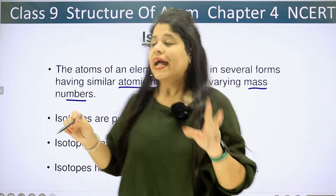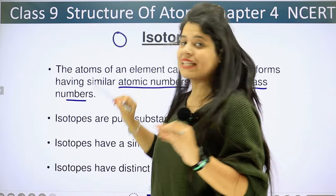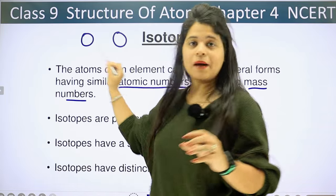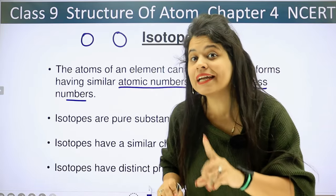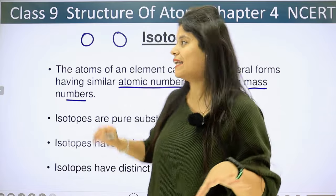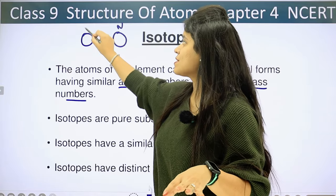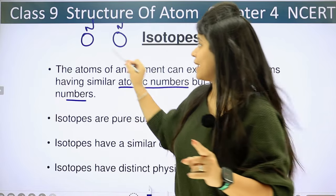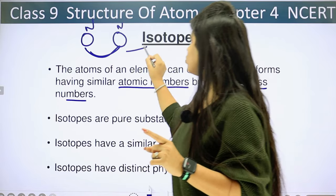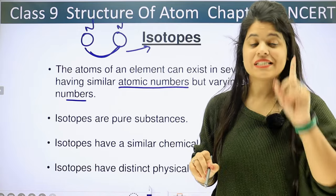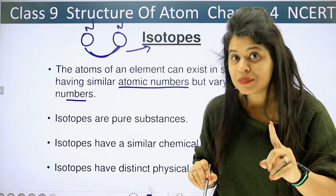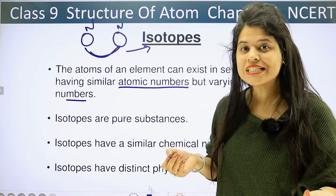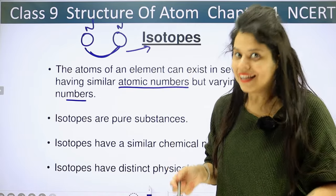How is it possible? If two atoms have the same atomic number, that means they have the same number of protons. But if their number of neutrons is different, then the mass number is different. So in this case, we say that these are isotopes — same atomic number but different mass number. In simple words, if the number of neutrons is different, the mass number is different.